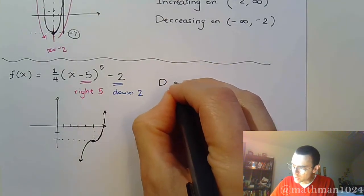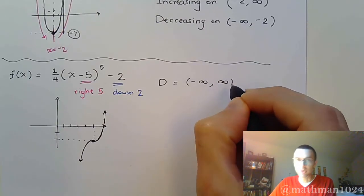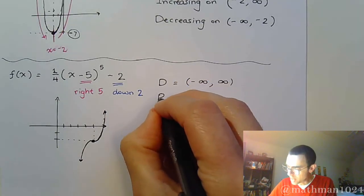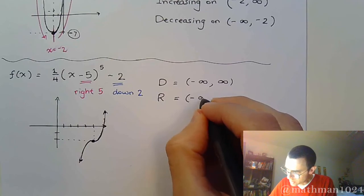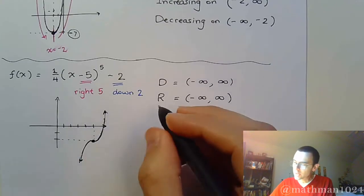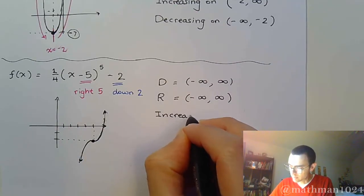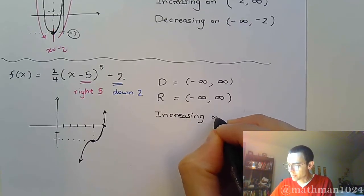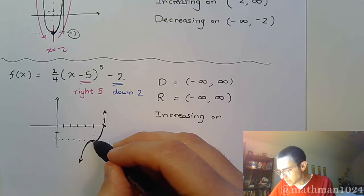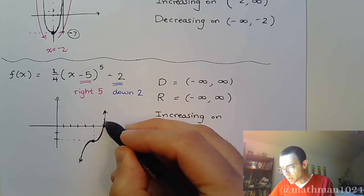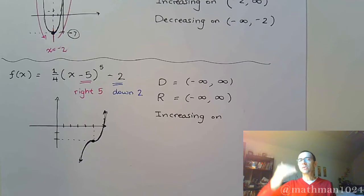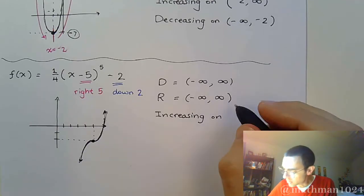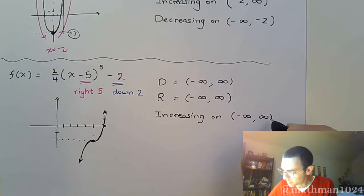Let's answer those questions. Your domain, as it is for all polynomial functions, is all real numbers — negative infinity to infinity. Your range: as you look at this picture, this graph goes all the way down and all the way up, so the range is all real numbers as well. Now let's talk about where we are increasing. As you trace along here, you see that you are going up the entire time. You kind of flatten out at one point but you are still increasing all the way to the right. There's never a point where the function stops going up, so he's increasing on the entire domain from negative infinity to infinity.